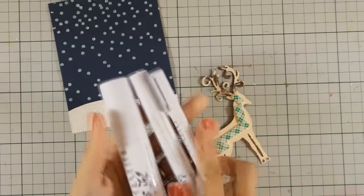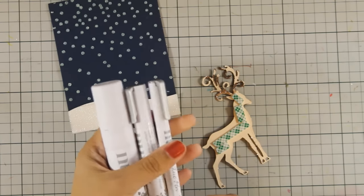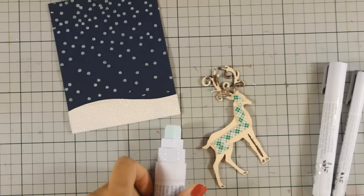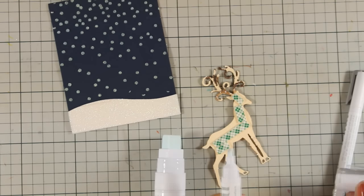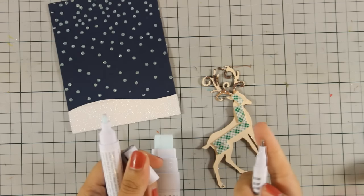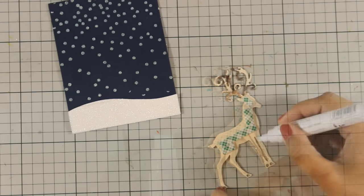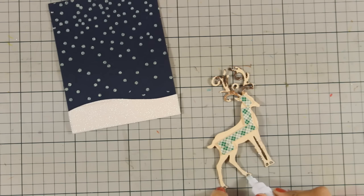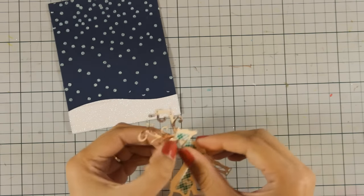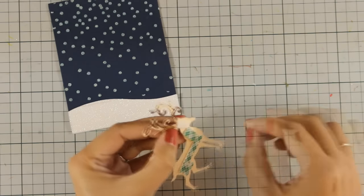For his legs I am going to use my Nuvo glue pen. As you can see they come in three different sizes. I'm going to show you the tips and remember that they are not just for glitter, you can use them for sticking paper on paper and they work really great. With my glue pen I am applying some glue at the back of his legs and I'm going to peel off the foam tape and stick him on my panel.